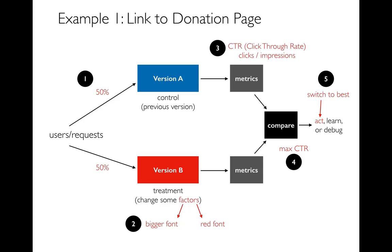For the donation page from project three, let's make this concrete. As requests came in, you split 50% between version A and version B for the first 10 requests. In version B you had some factors — maybe a different font, image, or any number of things. Then we collected some metrics that were basically equivalent to click-through rate.